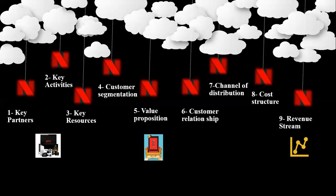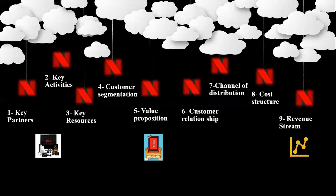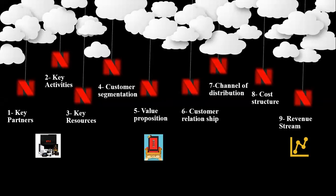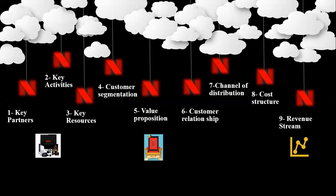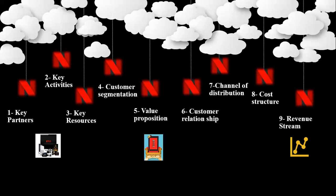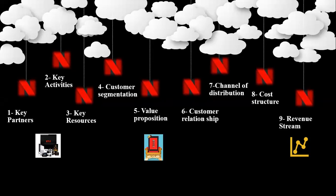After explaining the nine blocks of the business model canvas — key partners, activities, resources, customer segmentation, value proposition, customer relationship, channel of distribution, cost structure, and revenue stream — we are going to give you a very interesting example of one of the most successful business models of the 21st century, which is Netflix.